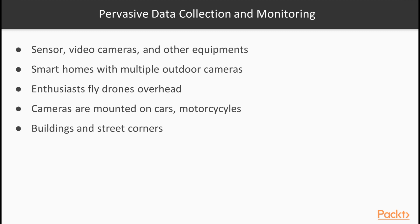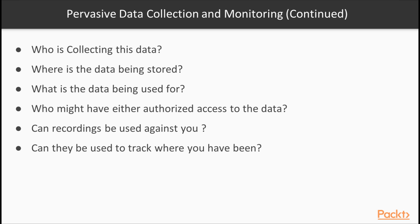Today, there are sensors, video cameras, and other equipment just about everywhere. Smart homes are outfitted with multiple outdoor cameras. Enthusiasts fly drones overhead, oftentimes over people's private properties. Cameras are mounted on cars and motorcycles, as well as buildings and street corners. It's difficult to go somewhere without being captured on camera. Who is collecting this data? Where is it being stored? What is it being used for? Who might have authorized or even unauthorized access? Can recordings be used against you or to track where you've been? As more and more connected devices come online, all of these questions will become even more relevant.